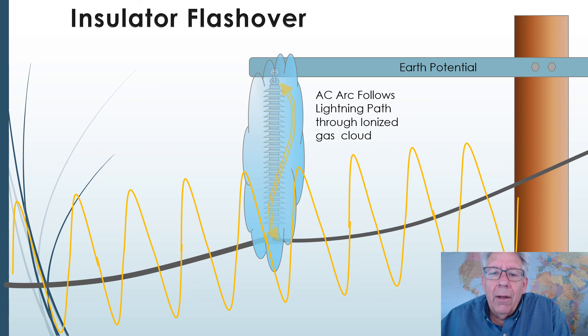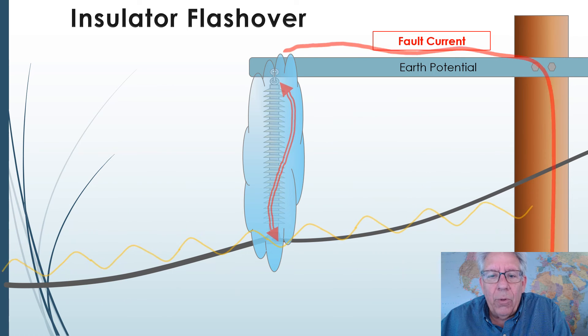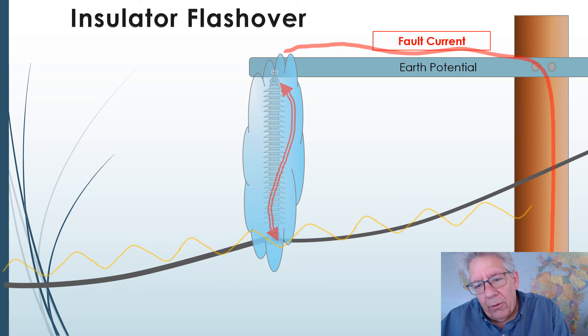So this AC arc then flashes over and we have fault current that begins to flow from the power system across the insulator, across the cross arm and down to earth.